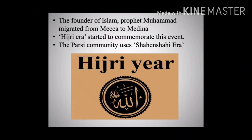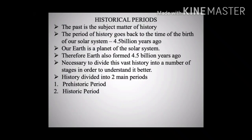We learn in the first lesson that history is a science that tells us about events that happened in the past. Every bygone moment makes up the past, and the past is the subject matter of history. In a broad sense, the period of history goes back to the time of the birth of our solar system. Our solar system came into being about 4.5 billion years ago, and it is presumed that earth was also formed 4.5 billion years ago. The span of 4.5 billion years since the earth's formation is a vast period of time, and it is necessary to divide it into a number of stages in order to understand it better.